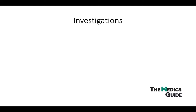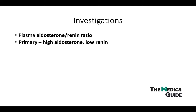When it comes to investigation, there are a lot of things we can do. The first line is always to check the aldosterone and renin levels. In primary hyperaldosteronism, aldosterone is high and renin is low; in secondary hyperaldosteronism, both are high.